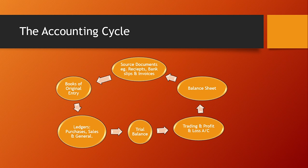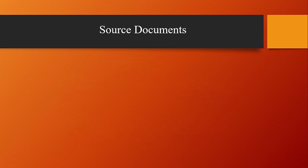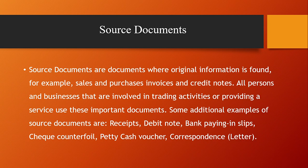The process then starts all over again. Source documents are documents where original information is found. Examples include sales and purchase invoices, credit notes — all persons and businesses involved in trading activities use these important documents. Additional examples of source documents include receipts, debit notes, bank paying slips, cheques, petty cash vouchers, and even letters or correspondence.